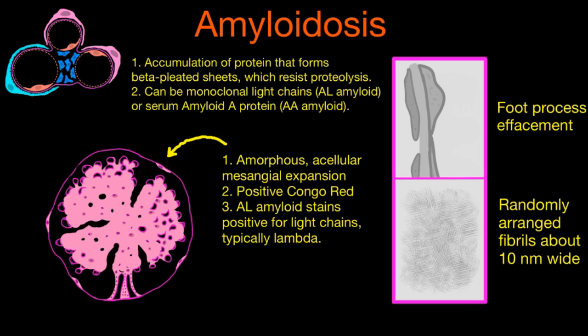Under electron microscopy, we would see foot process effacement — the podocytes are being injured as well. Amyloid will build up within them. If you look inside a podocyte or mesangial cell, you will see accumulations of randomly arranged fibrils — the amyloid fibrils themselves. If you were able to measure them, they're about 10 nanometers wide, and it's the width that helps determine the specificity for the fibril and supports the diagnosis of amyloid.